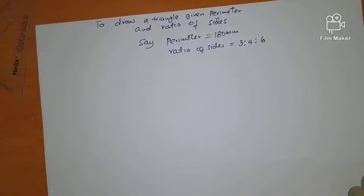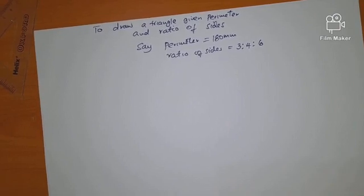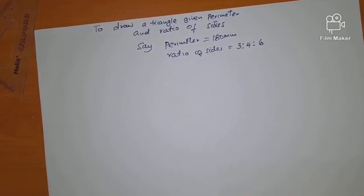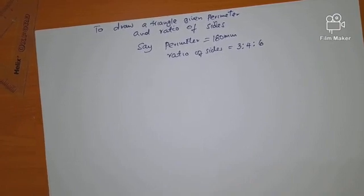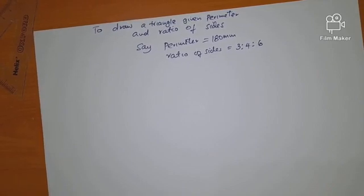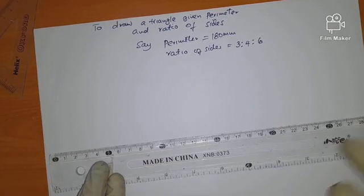Hello, welcome. We are going to draw a triangle given the perimeter and the ratio of the sides, meaning the three sides are in a ratio. What we shall do is first of all draw a straight line equal to the perimeter of the triangle we want to draw.